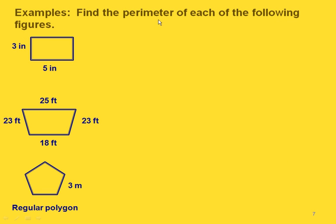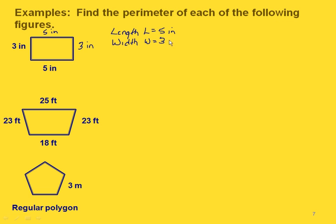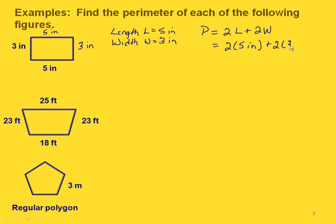Here are some examples. We want to find the perimeter of each of the following. In this one we have a rectangle with a length of five inches and a width of three inches. Using the formula P equals 2L plus 2W, we have two times five inches plus two times three inches. Two times five gives us 10 inches, two times three gives us six inches, and adding those together gives a total of 16 inches.